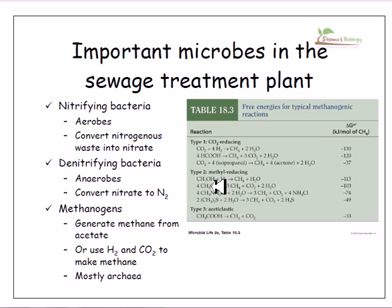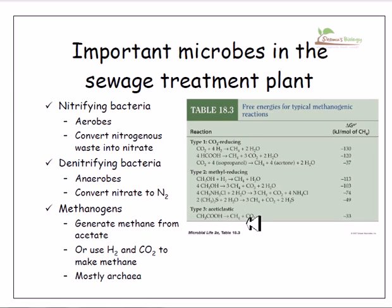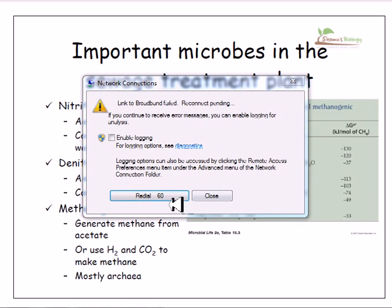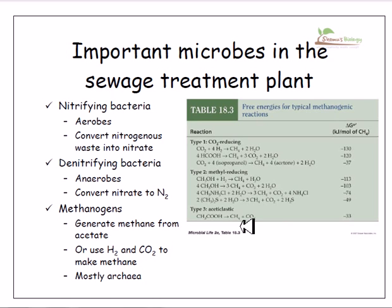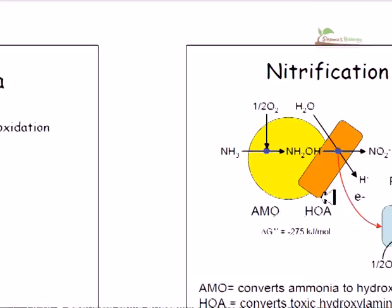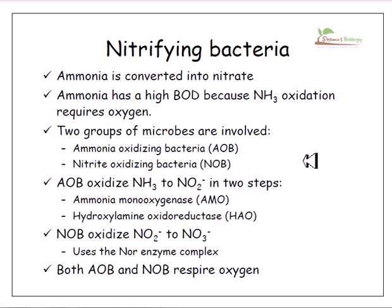The second type is the methyl-reducing methanogens, which use methyl groups such as CH3OH or CH3NH2. They can derive methane along with carbon dioxide and water from these complex structures. The third type is the aceticlastic methanogens, which derive methane gas and carbon dioxide from acetic acid (CH3COOH). These are the different variations of methanogen types.